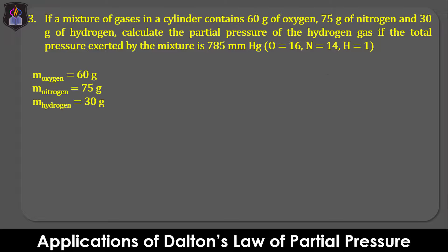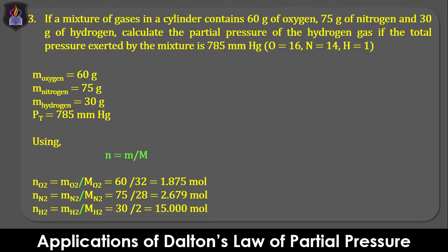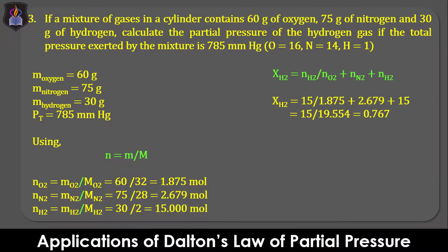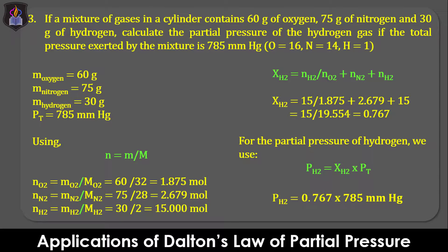From the parameters: masses of oxygen, nitrogen, and hydrogen are 60 g, 75 g, and 30 g respectively; total pressure is 785 mmHg. Using moles = mass/molar mass, the number of moles of oxygen, nitrogen, and hydrogen are 1.875, 2.679, and 15 moles respectively. The mole fraction of hydrogen, XH₂, is the ratio of moles of hydrogen to total moles of all gases, giving a value of 0.767. Note that the mole fraction is a ratio and has no unit. Finally, the partial pressure of hydrogen = XH₂ × Pt = 0.767 × 785 ≈ 602.1 mmHg.